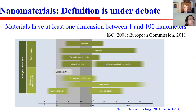A nanoparticle, or nanomaterial, is defined as a material that has at least one dimension between 1 and 100 nanometers. Although this definition is well within the mainstream of current acceptance, it is still under debate, with different studies citing the upper size limit at 100 nanometers or some other value, because size-based technical definitions may be insufficient for applications and risk assessment.